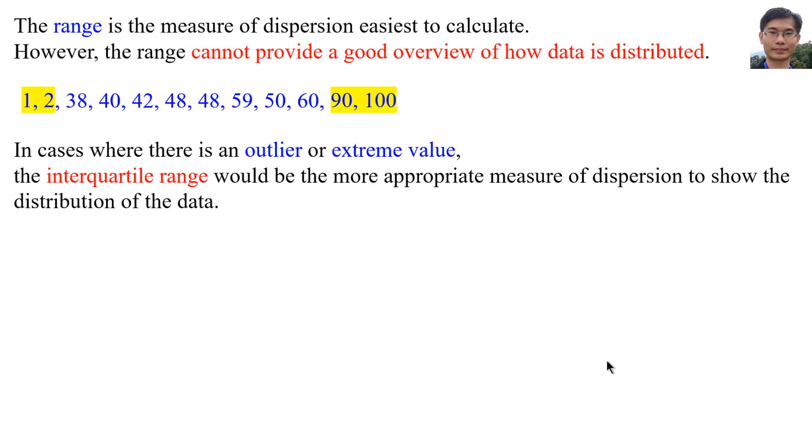it is not the case. If we find the interquartile range, the interquartile range equals third quartile minus first quartile. Before that, we need to find the median. The median is here. Before median, there are 6 data. After median, there are 6 data.